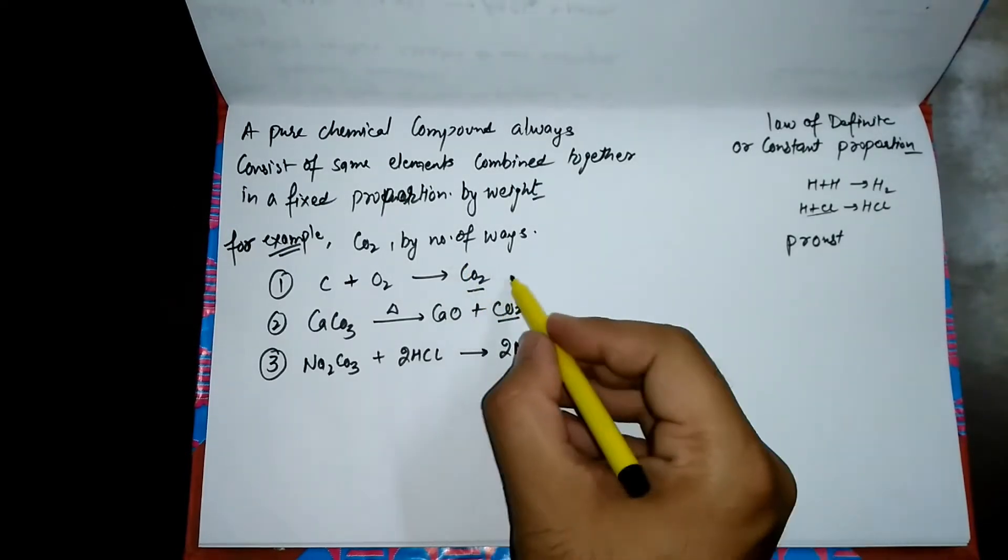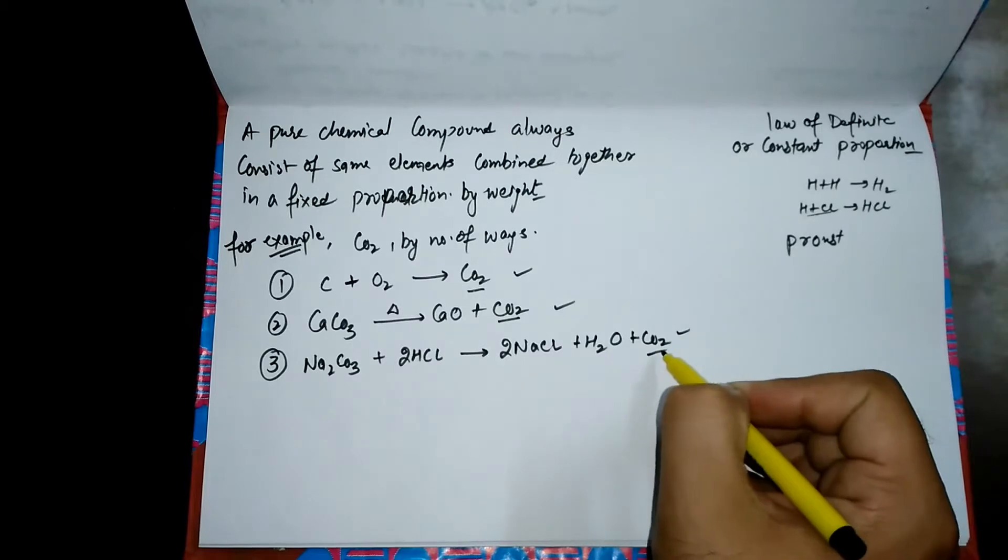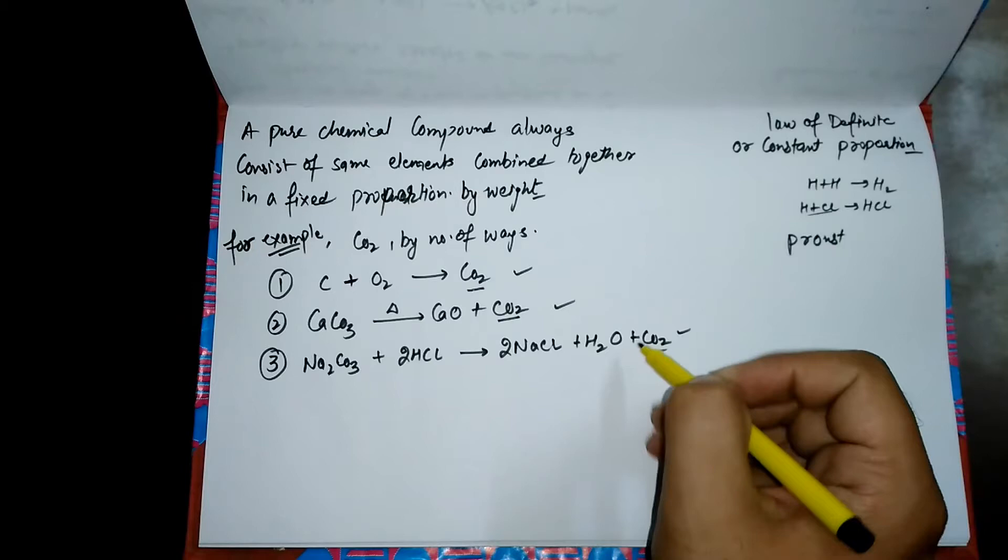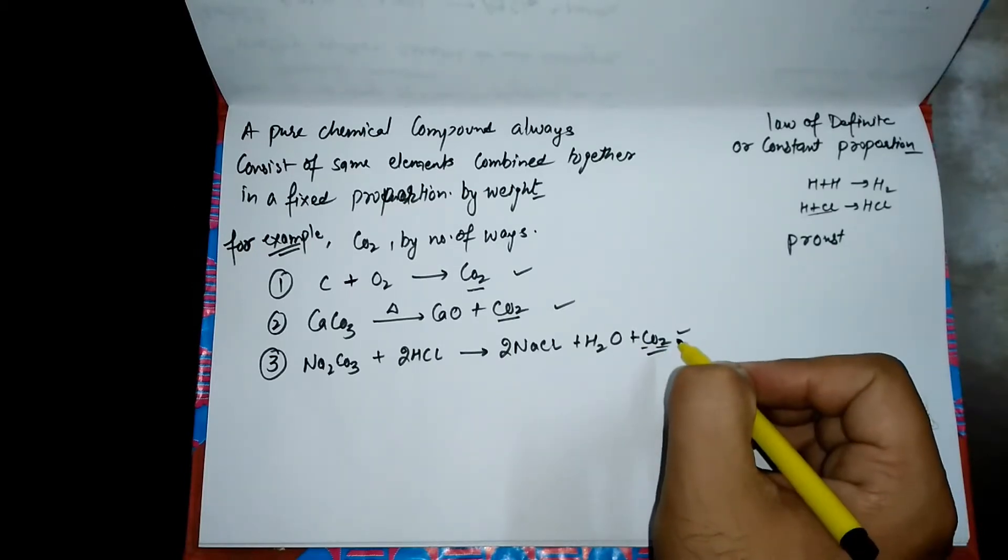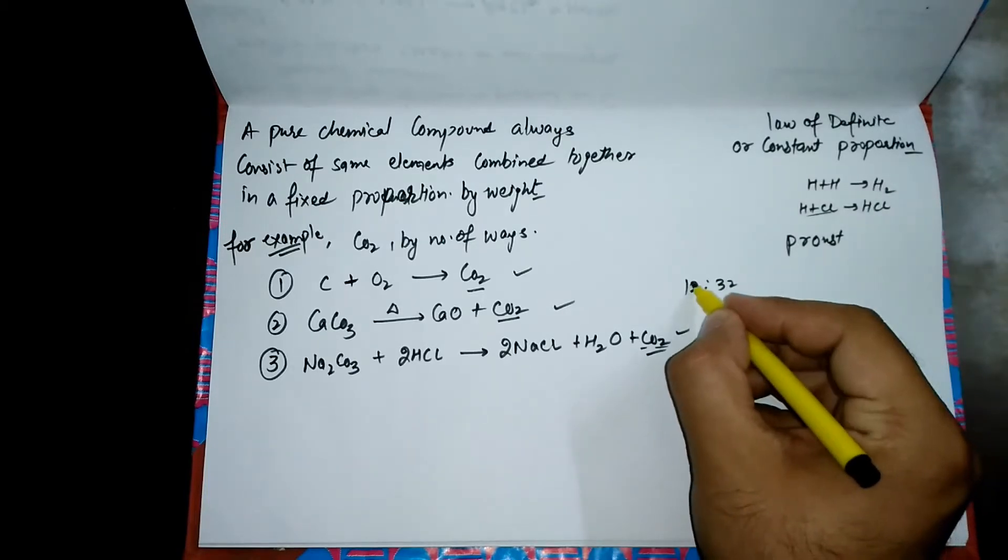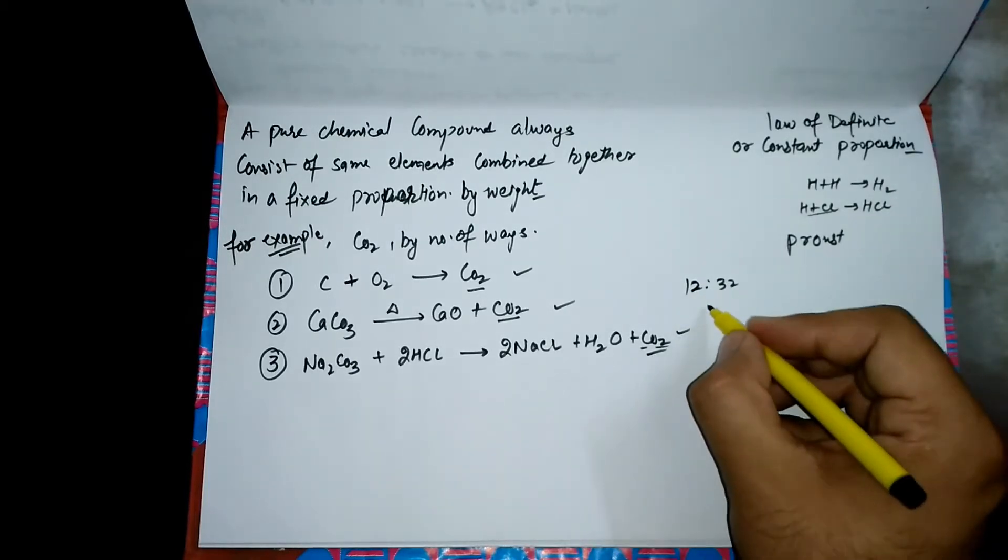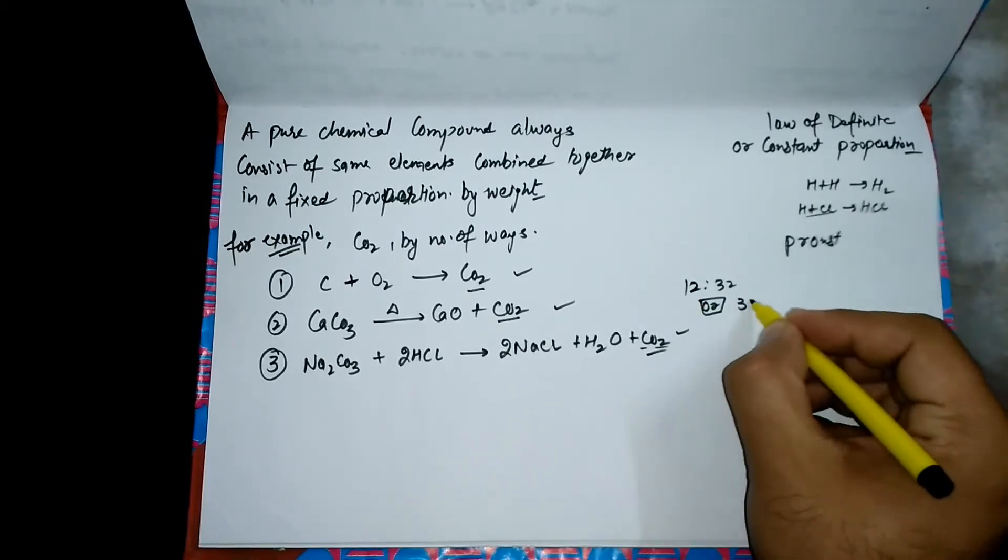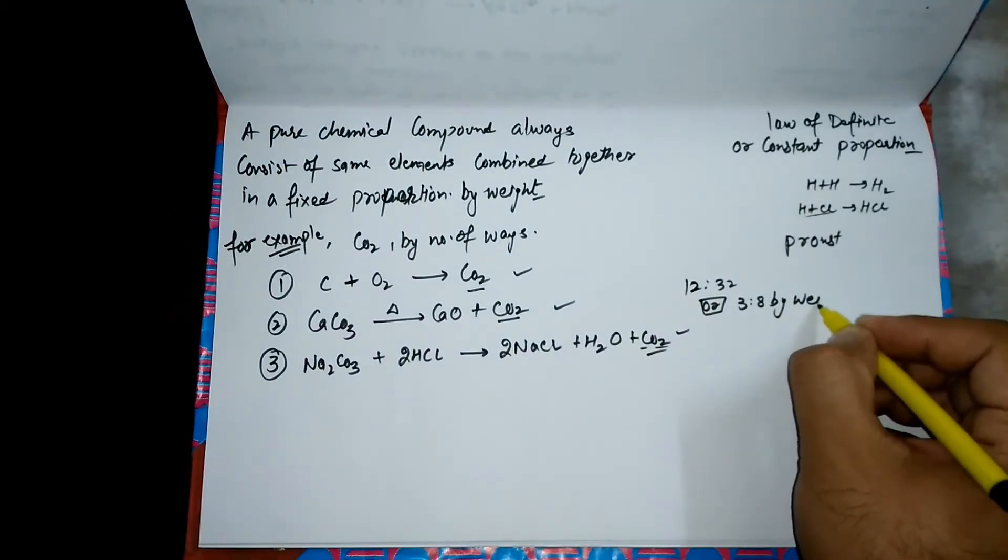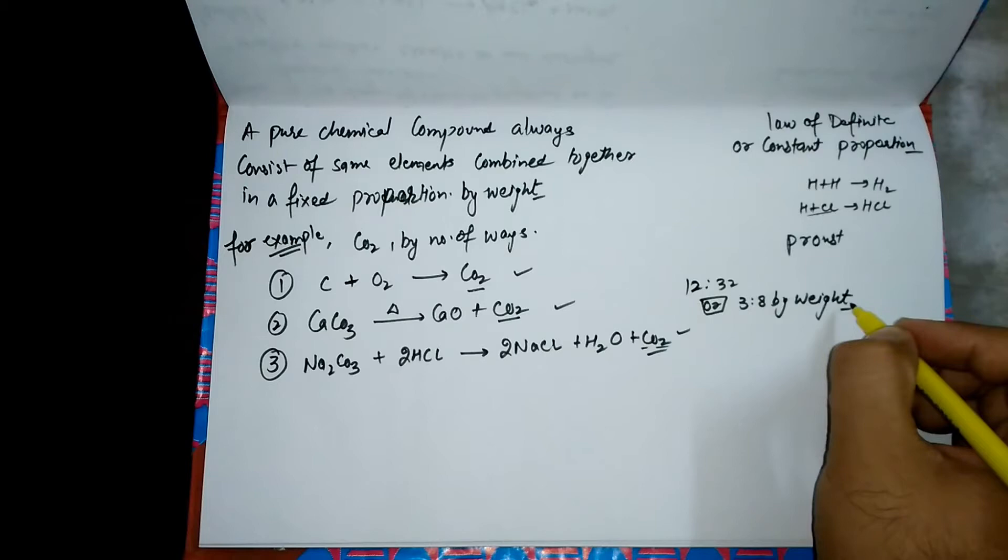In all these three samples of CO2, the carbon and oxygen are in a ratio of 12 ratio 32, or we can say 3 ratio 8 by weight.